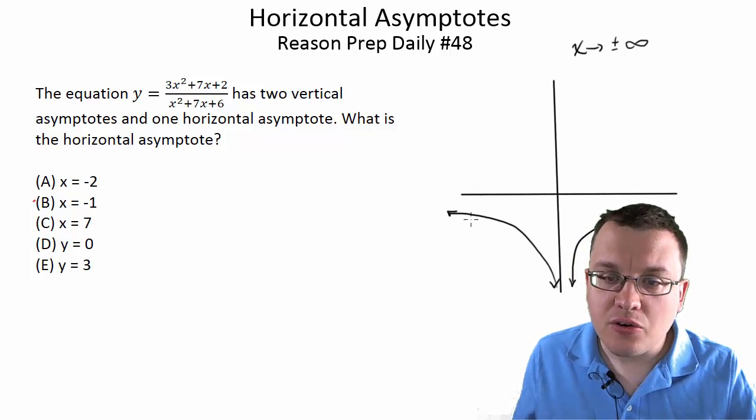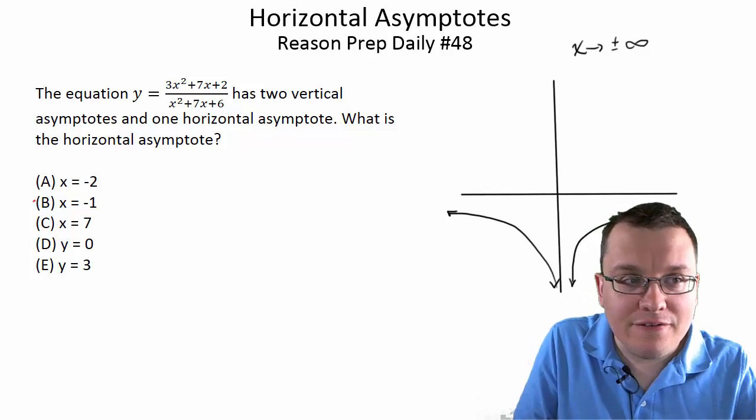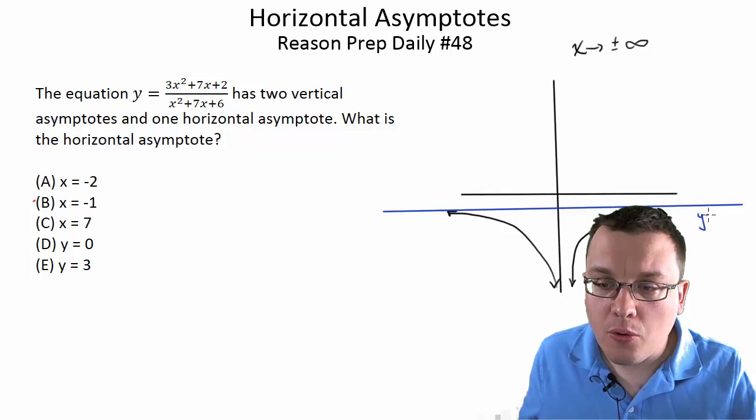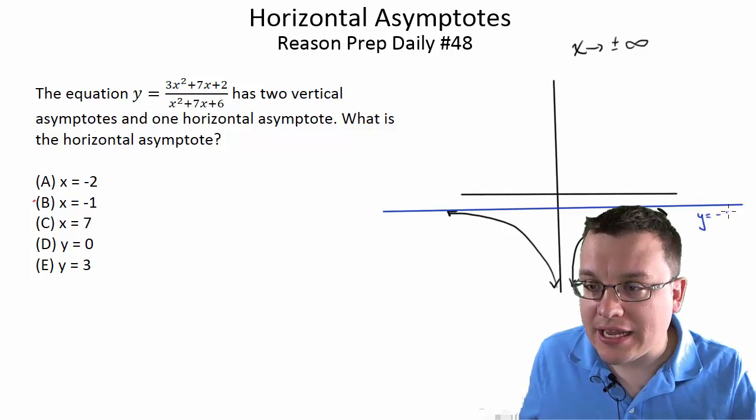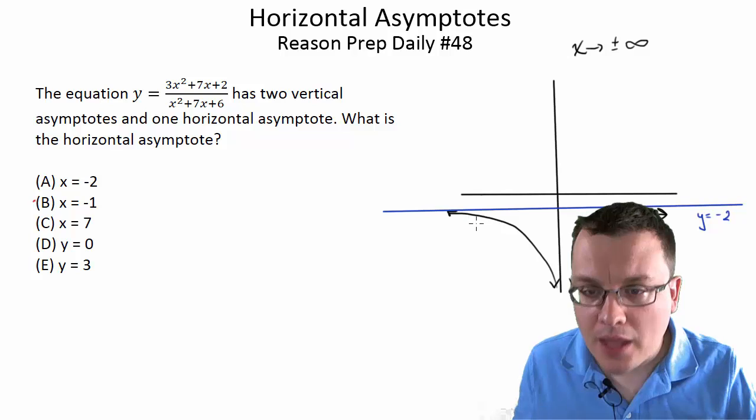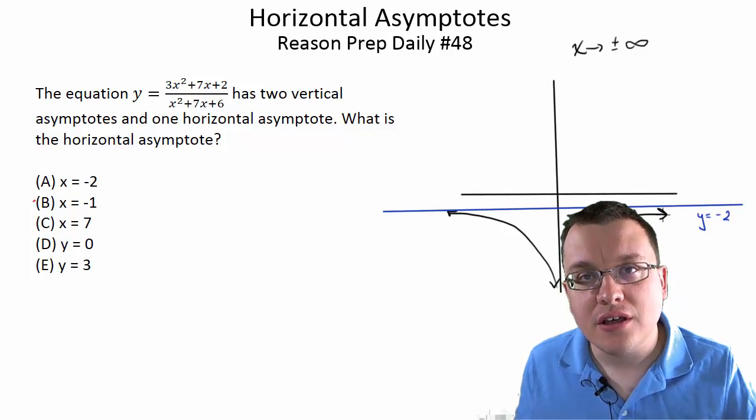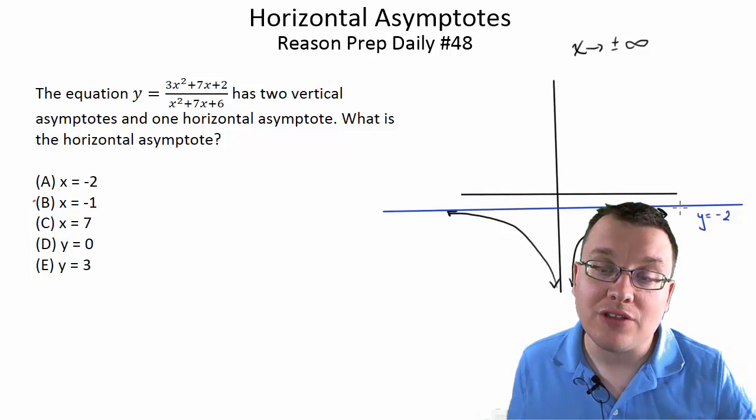this graph flattens out. And in fact it approaches some asymptote, some line with the equation y equals whatever, negative 2. Or whatever it is in this case, right? But this function will approach it and never touch or cross the asymptote. And that's a horizontal asymptote.